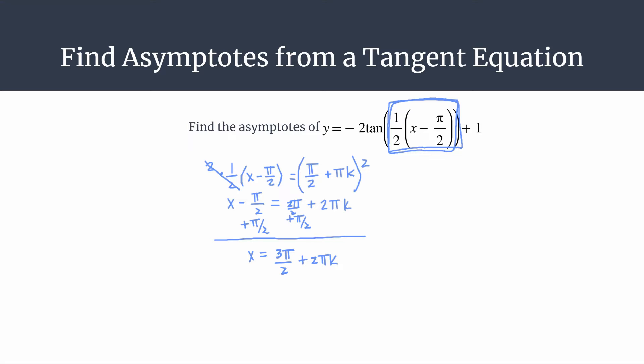So let's try substituting in different values for k just to make sure we understand how to use this asymptote generating equation. Okay, let's first start by letting k equal to 0, it's probably the easiest. So all we do is substitute in 0 for k into our equation. So we have x equals 3 pi over 2 plus 2 pi times 0, which of course makes that term go to 0, and we're left with just 3 pi over 2. So we have a vertical asymptote for this graph at 3 pi over 2.